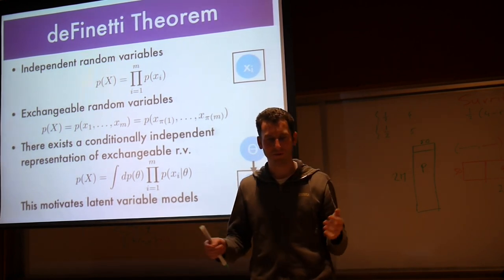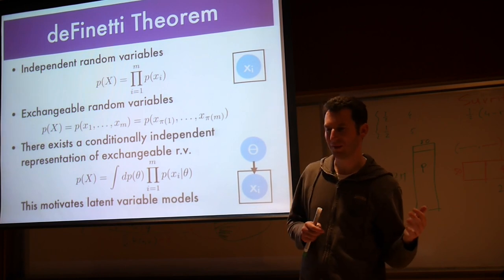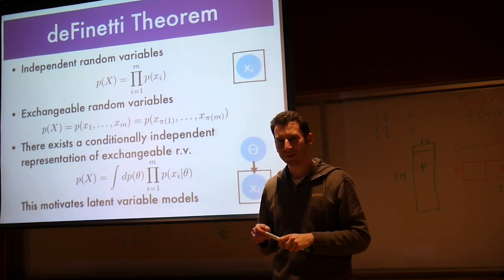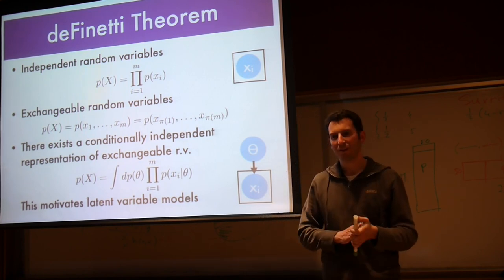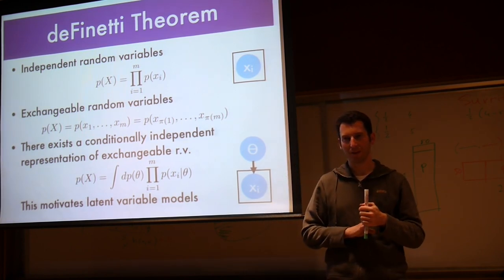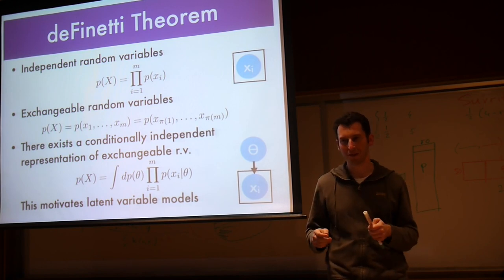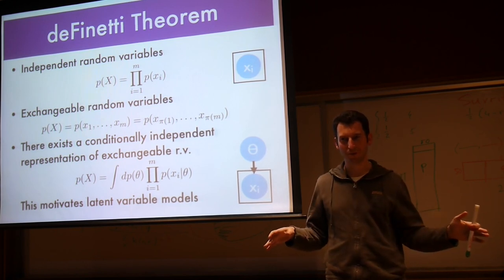In other words, we can write P of X given zeta, the product of all those X_i's which now condition on sub-prime zeta are independent, and then I just need to integrate out zeta. So this in a way motivates the latent variable models where we have some latent unknown parameter which governs the generation of all the data, and once we know that, everything's good.